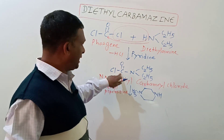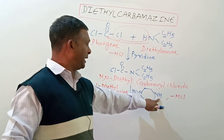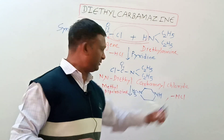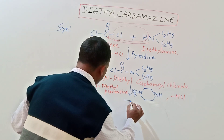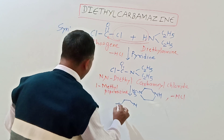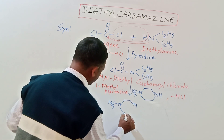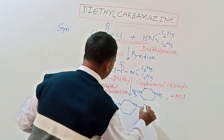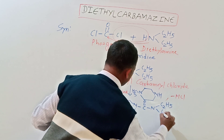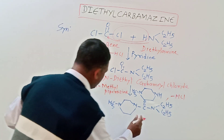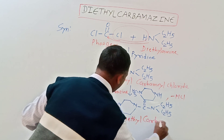Once again, the secondary amino group attacks on this carbonyl carbon to release an HCl molecule — one hydrogen from the amine and the chlorine — releasing HCl out. This gives us the formation of our titled compound which is called diethyl carbamazine, our final product.